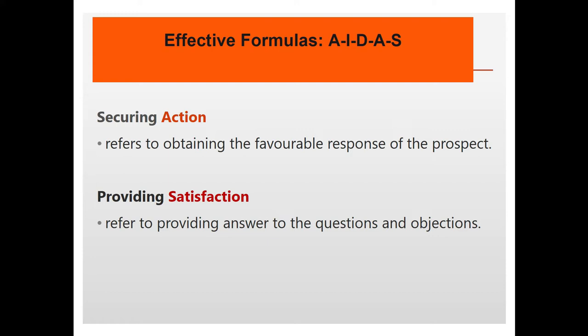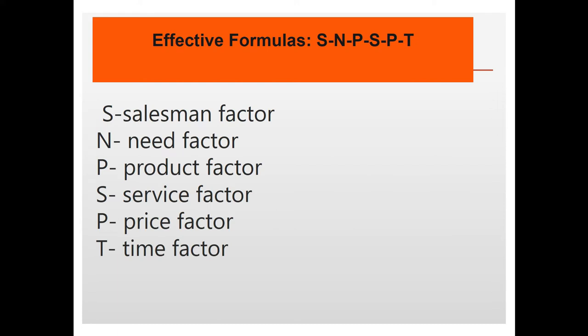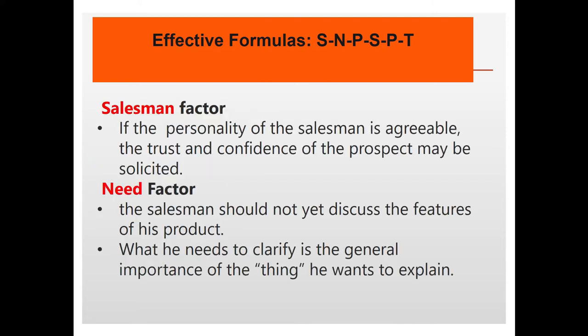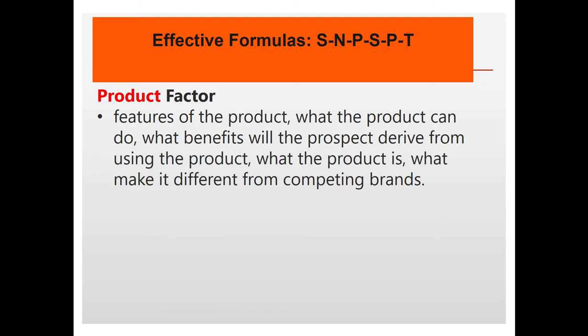Now let's look at another formula: SNP SPT. We have the Salesman factor, Need factor, Product factor, Service factor, Price factor, and Time factor. For the Salesman factor, we're talking about the personality of the salesman — if the personality is agreeable, the trust and confidence of the prospect may be solicited. For the Need factor, the salesman should not yet discuss the features of the product but rather clarify the general importance of the product.